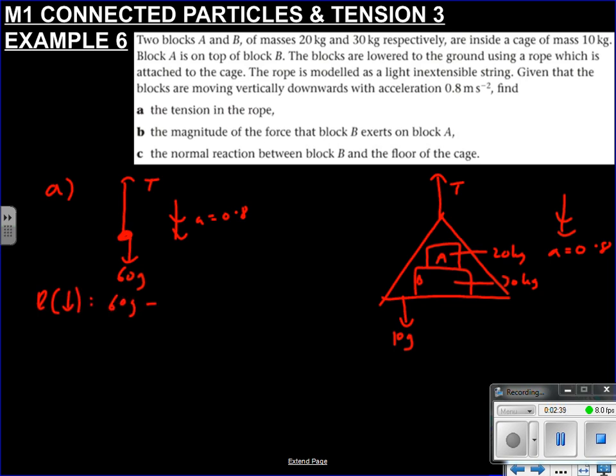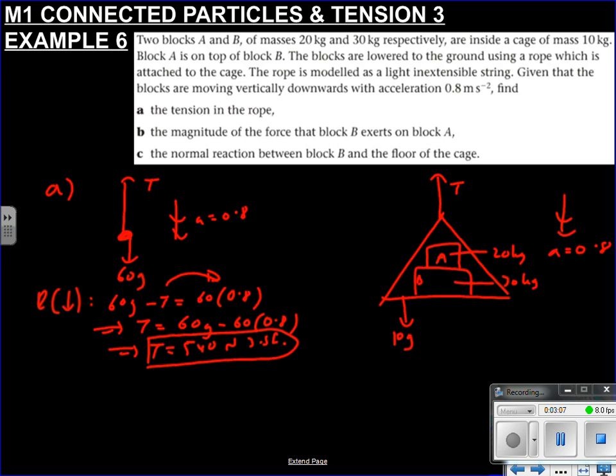60g is going down. Subtract the tension is our mass times acceleration. So therefore, tension is 60g subtract 60 times 0.8, moving that tension over, moving the number over. And therefore, tension is 60 times 9.8 minus 60 times 0.8. So 540 newtons, 3 significant figures because we're using g. That's part A.